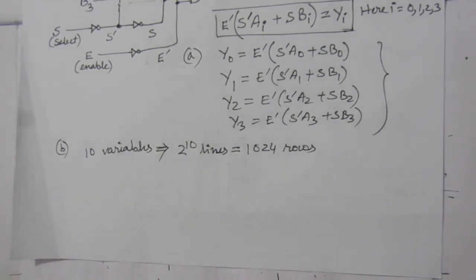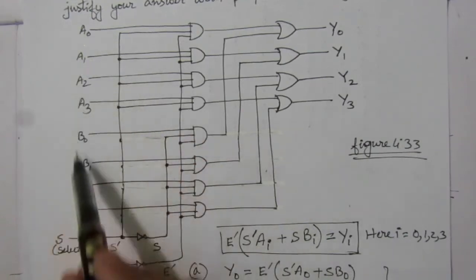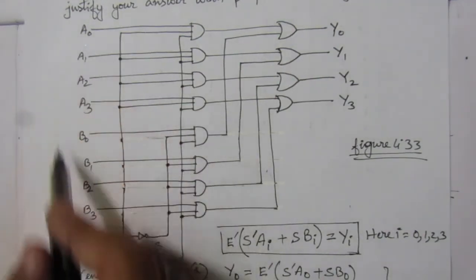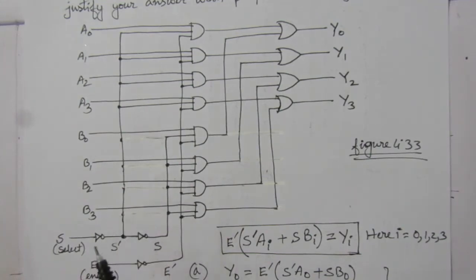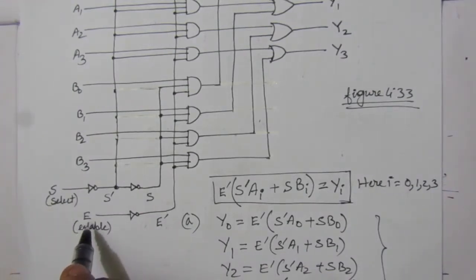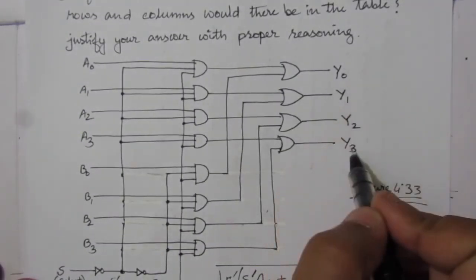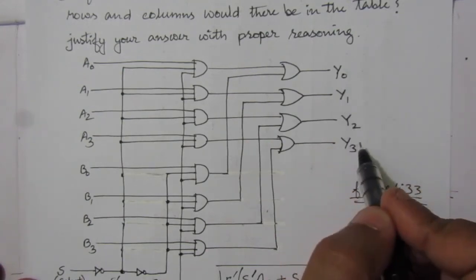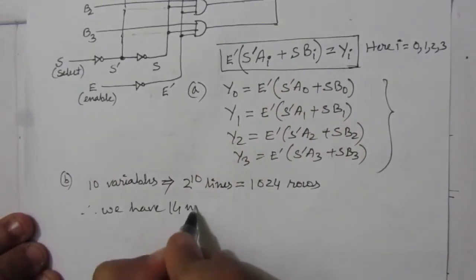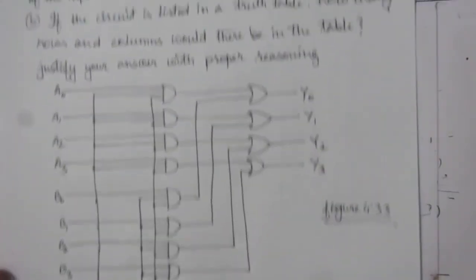For the number of columns, we have 4 inputs A0–A3 and 4 inputs B0–B3, giving 8 input columns, plus 1 column for the select line and 1 column for the enable line, totaling 10 input columns. We also have 4 outputs Y0–Y3, so 10 plus 4 equals 14 number of columns in the truth table.